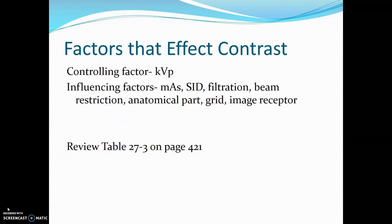KVP is the primary controlling factor of contrast, and there are several other influencing factors such as mAs, SID, filtration, beam restriction, anatomical part, grid, and the image receptor.